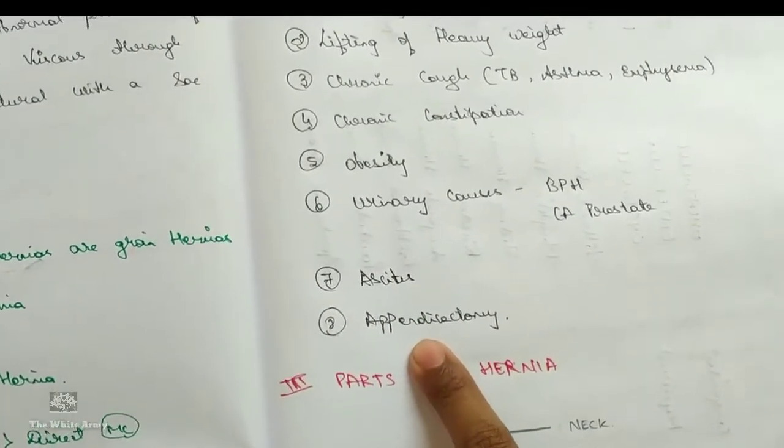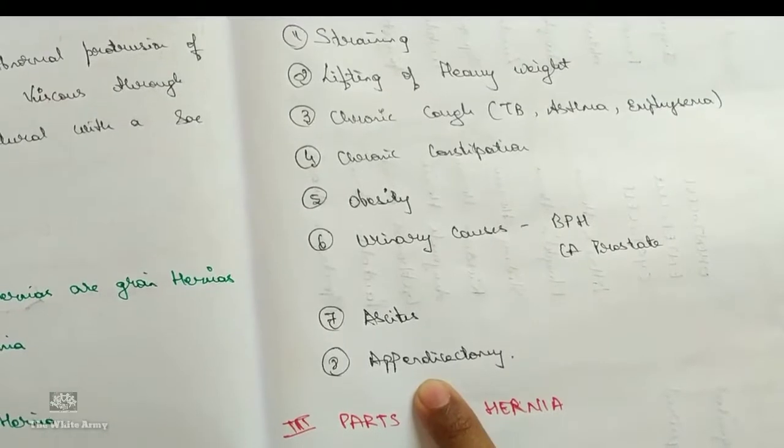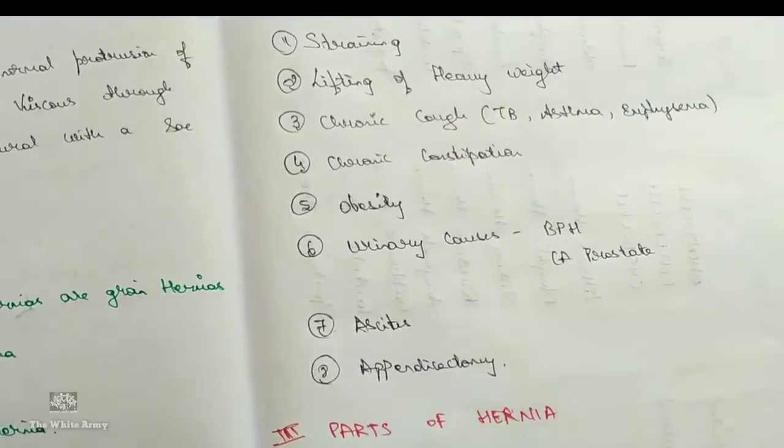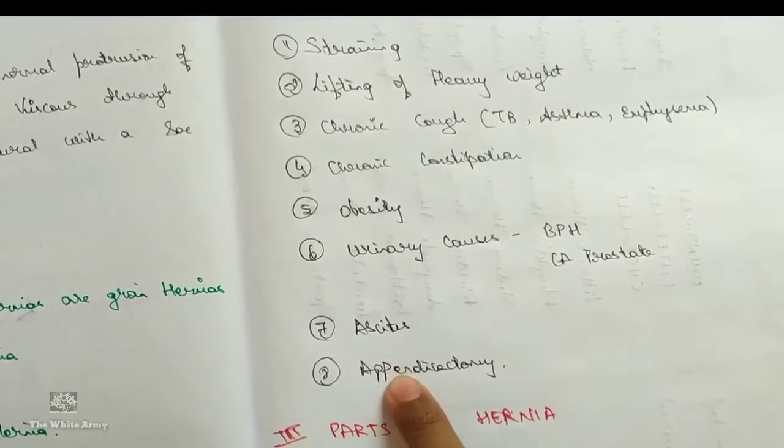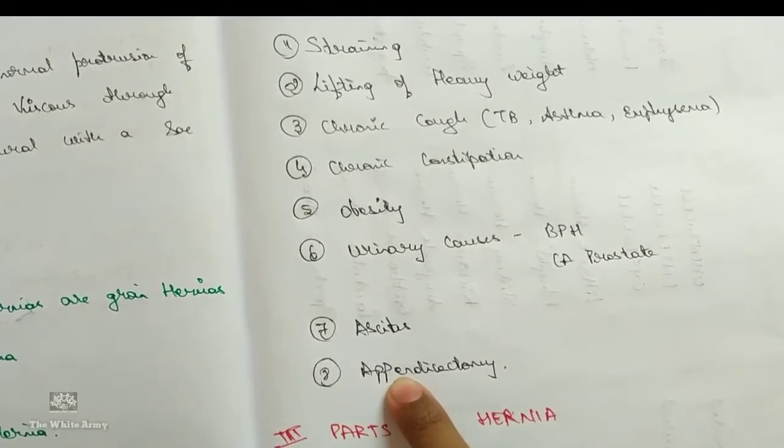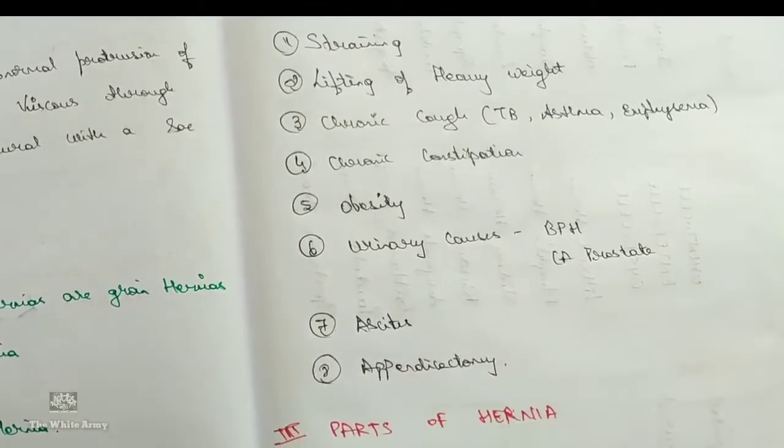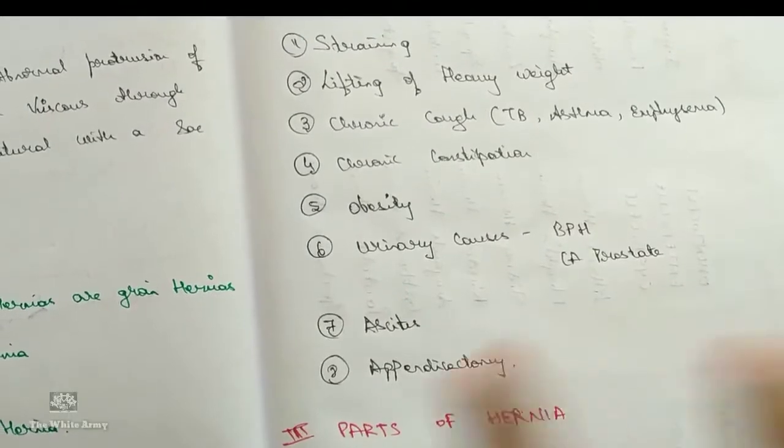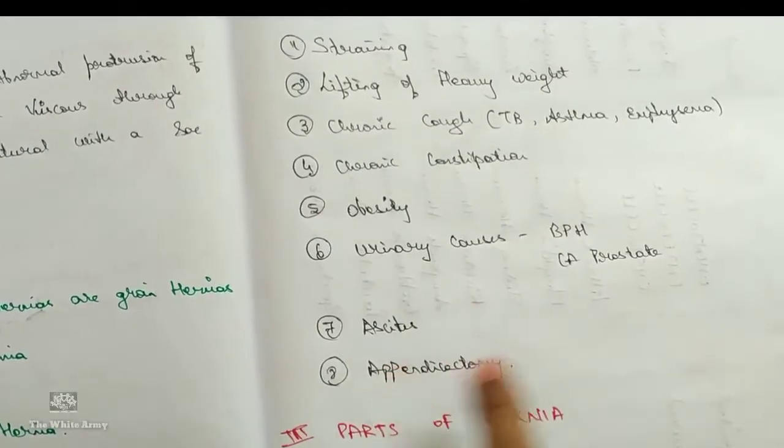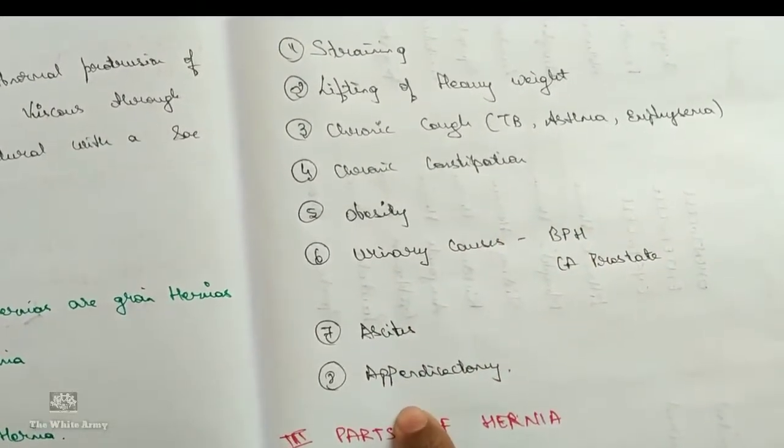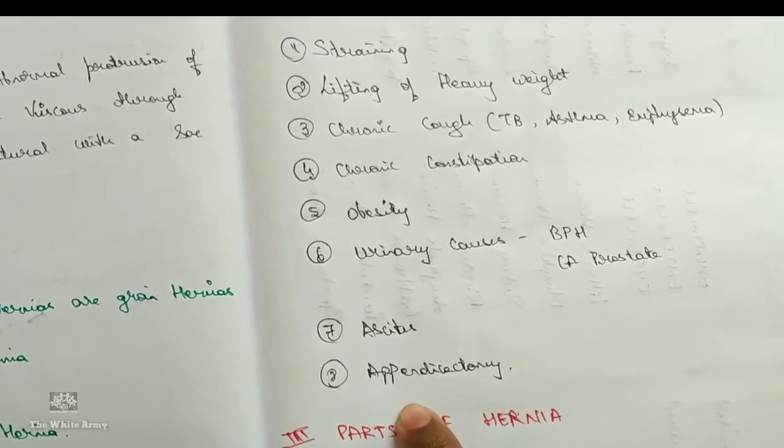You may wonder how appendicectomy is related to hernia. Appendicectomy, an operation which deals with the removal of appendix, when during the operation the ilioinguinal nerve is damaged which leads to the weakening of the wall which may lead to hernia.